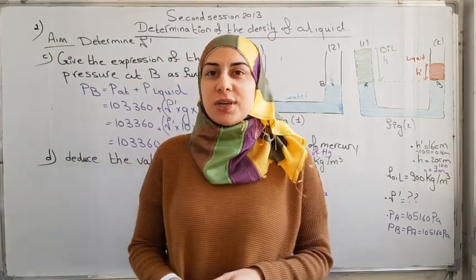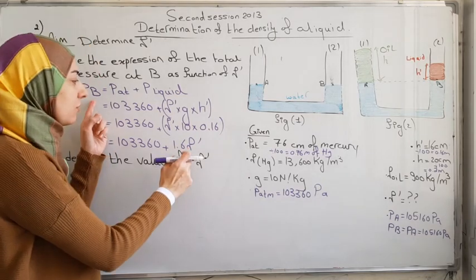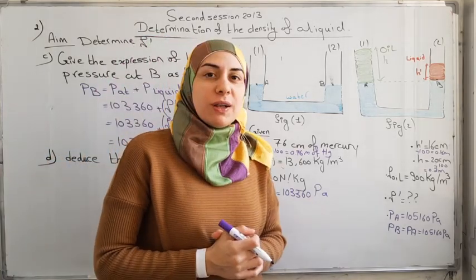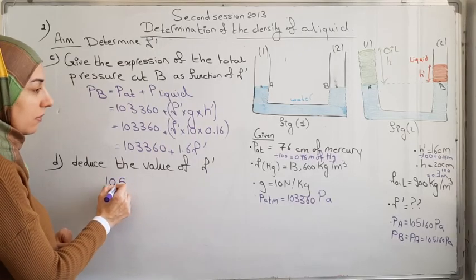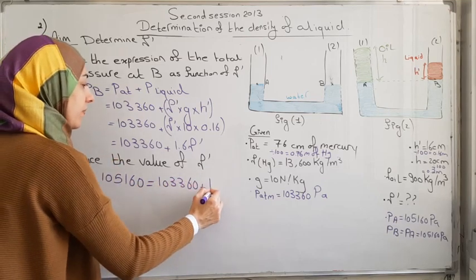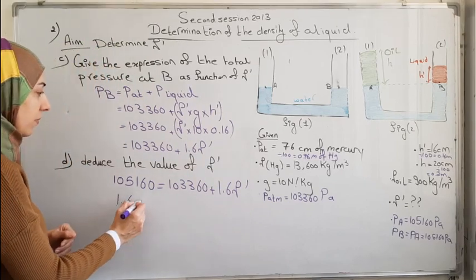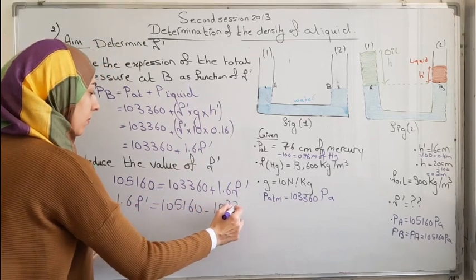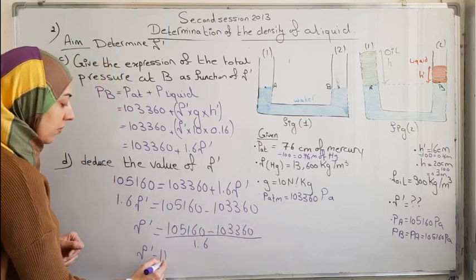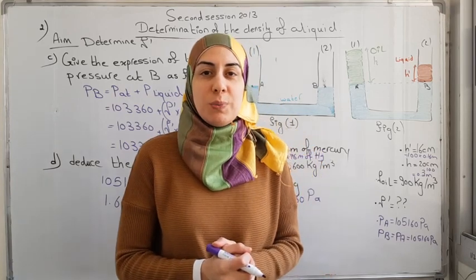In the last part of this exercise, we deduce the value of rho prime, the density of the liquid. In the previous part we found the pressure at B in terms of rho prime, and before that we found the numerical value of the pressure at B. Setting these equal, we have only one unknown in the equation and can easily solve for rho prime. The density of the liquid is 1,125 kilograms per cubic meter.